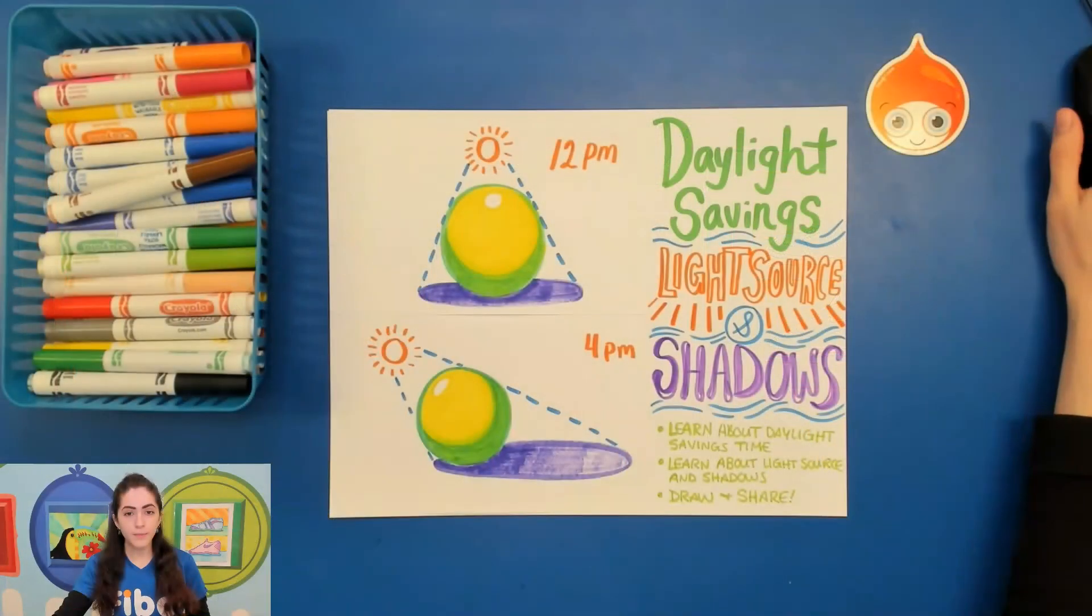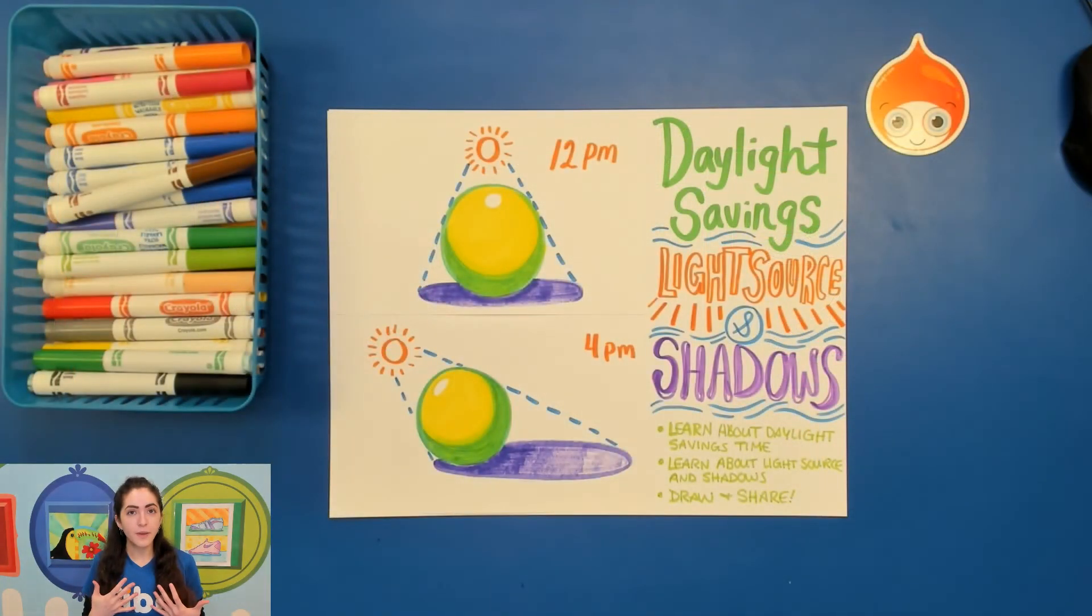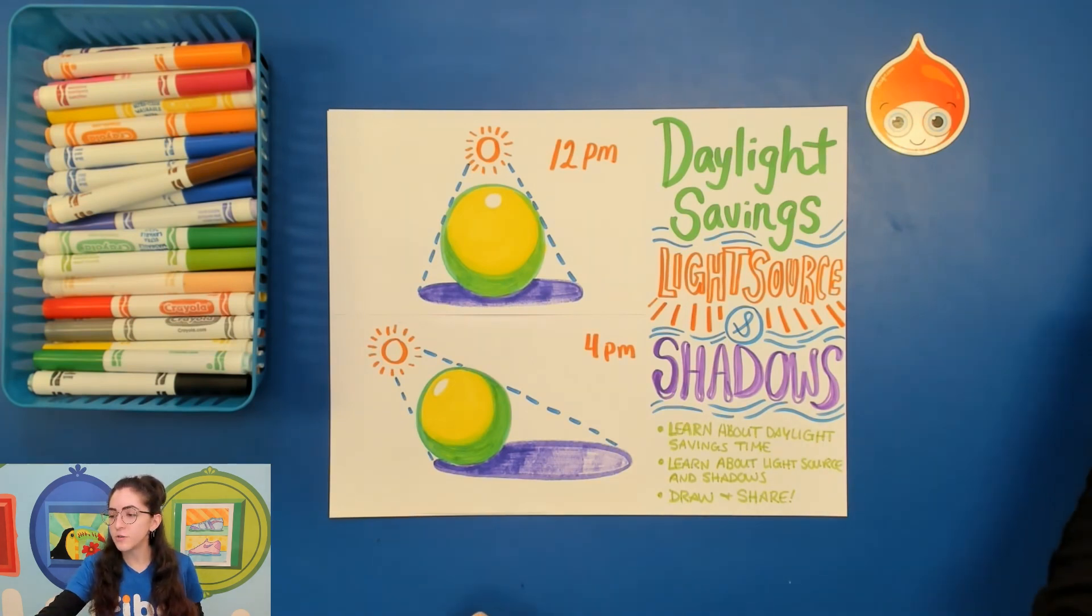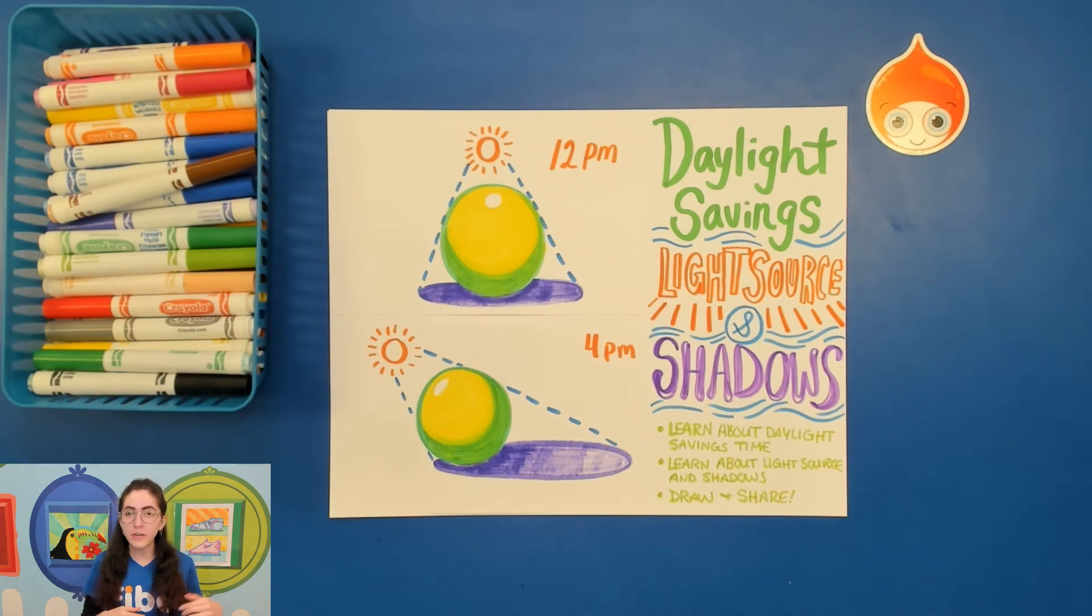Now for our warm-up today we are learning something that's a little bit more technical. For this we're learning about light source and shadows. Depending on the time of day a shadow is going to look different. I'm sure you've maybe noticed it yourself as you go and you walk outside at one point of the day and you look down you see your shadow it looks a little bit shorter but maybe at another part of the day your shadow looks much longer. Now this is all due to the position of the sun which is our light source.